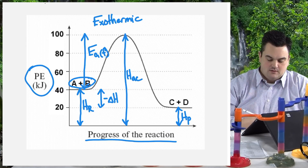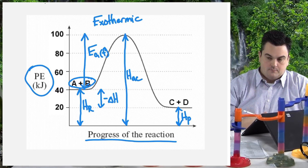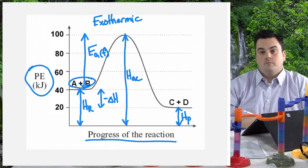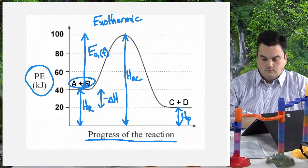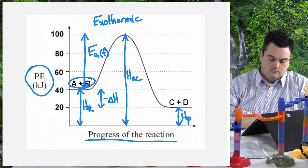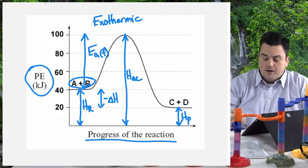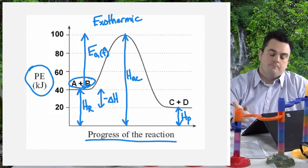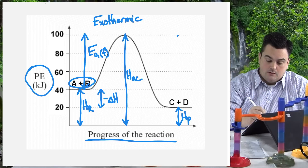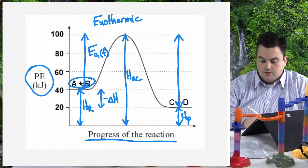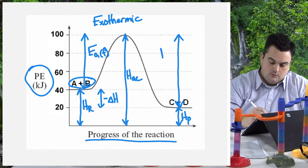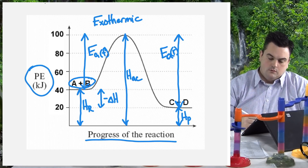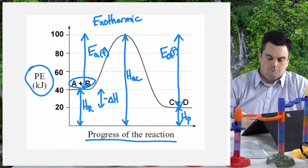You have to go up that hill first before you complete the reaction — that's how you remember what activation energy is about. One more thing to label: the activation energy of the reverse. If this reaction goes in the exact opposite direction — products back to reactants — our new starting point is C and D at 20. We have to go all the way back up the hill to 100, so EA(R) is 100 minus 20 equals 80 kJ. In roller coaster terms, you'd have to click back up that hill for a long time, and then you don't drop as much as you did going exothermic.